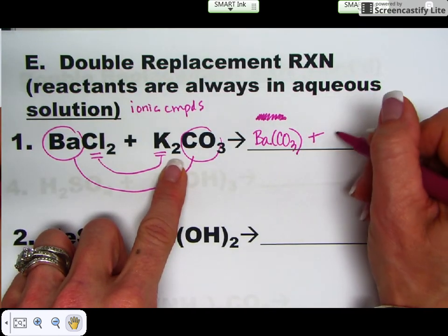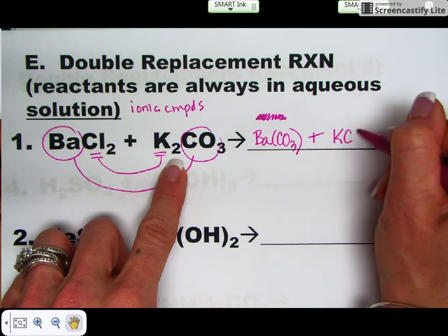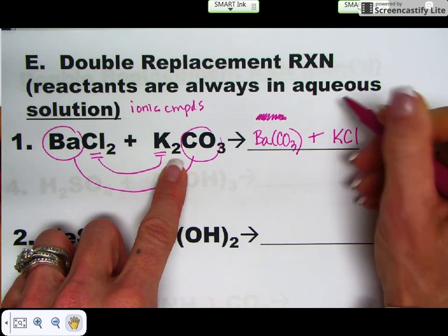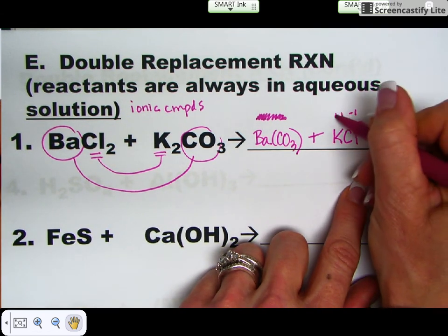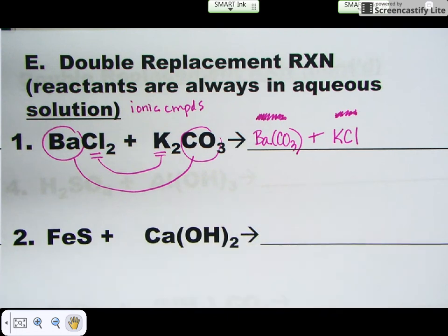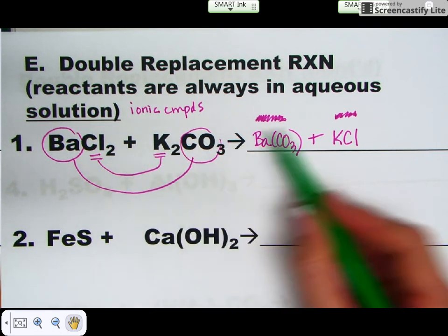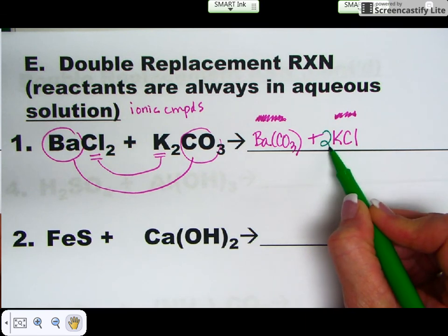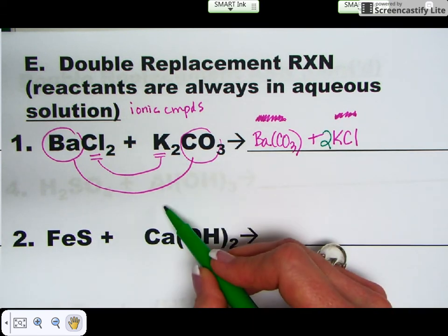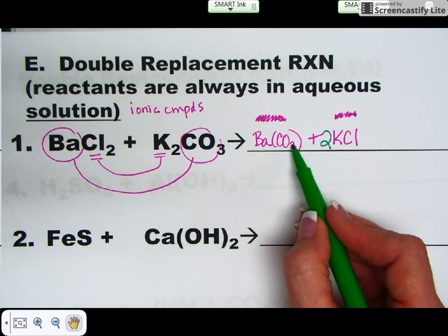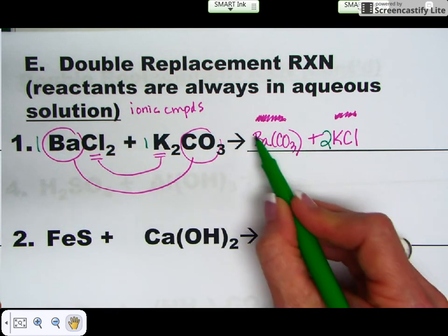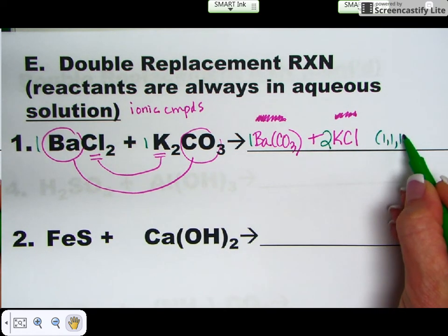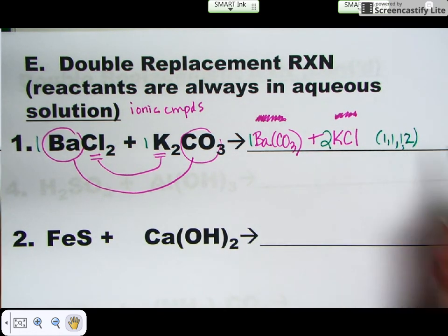And now potassium and chlorine are going to come together. Remember, do not bring over the subscripts. You're going to put your symbols side by side, KCl. He's a plus one. He's a minus one. So charges cancel. That is your formula for potassium chloride. You want to go back and balance your equation. I have two chlorines here, so I put a 2 under the KCl. That gives me two potassiums and I have two potassiums. I have one carbonate, one carbonate, one barium, and one barium. So one, one, one, two balances that equation.